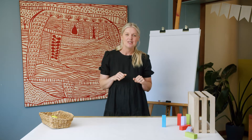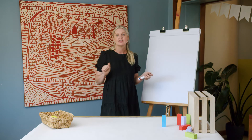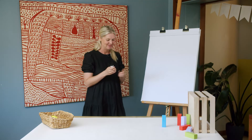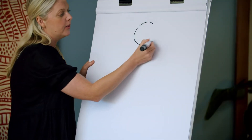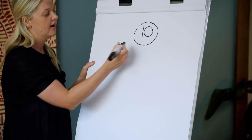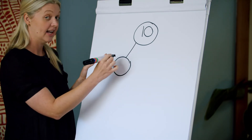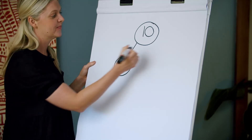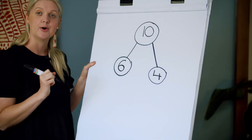Let's represent this using our cherry model. Mathematicians call what we've been doing subtraction — say it with me: subtraction. Well done. So when we are subtracting, we know our larger collection; we know we are starting with 10. We are removing a collection — this time we removed six, and we know there were four left.